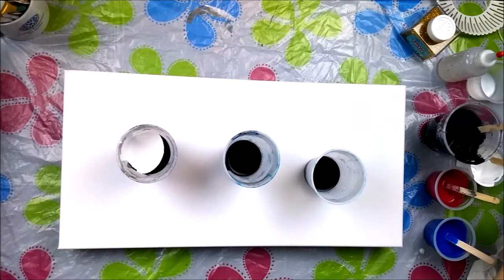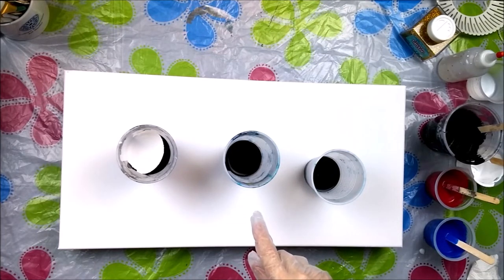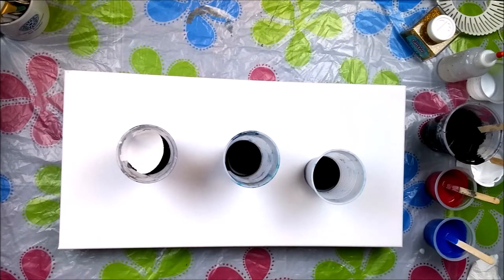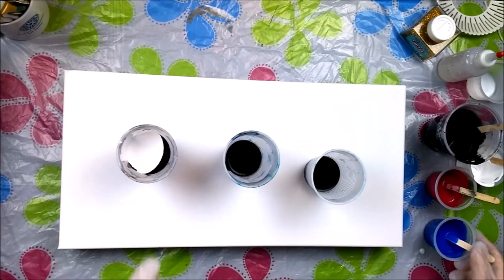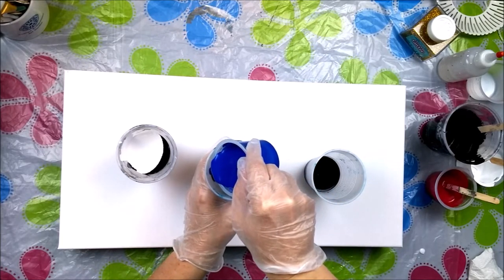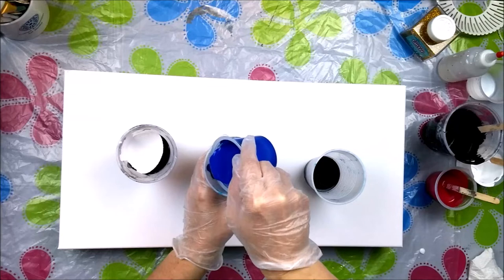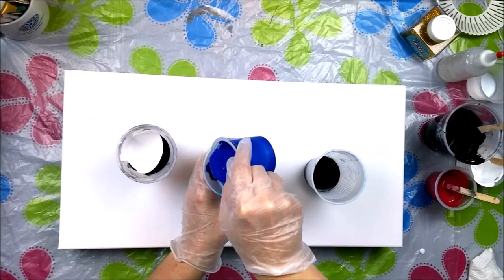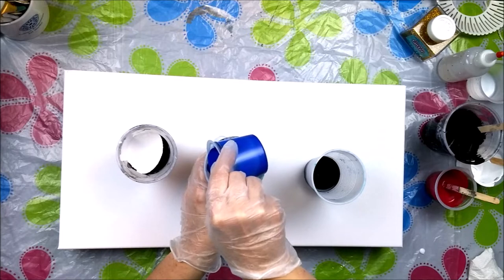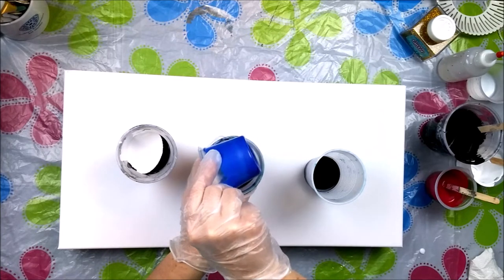Set that aside. We want to do red or blue next. In my mind's eye I see it as blue, so we'll pour the blue next. If you pour down the side, the paint tends to layer more so than mix.